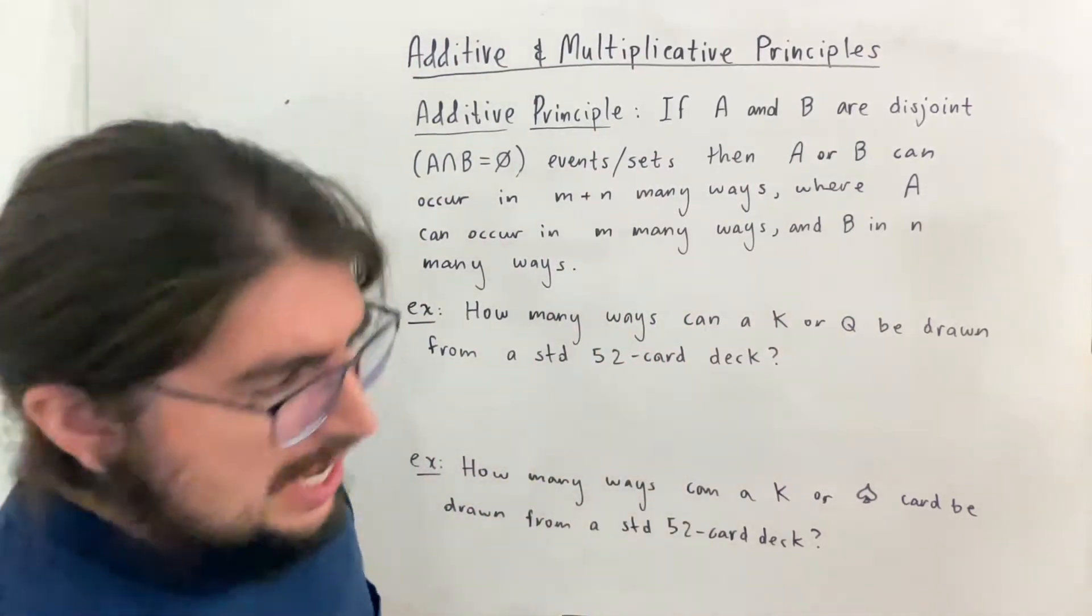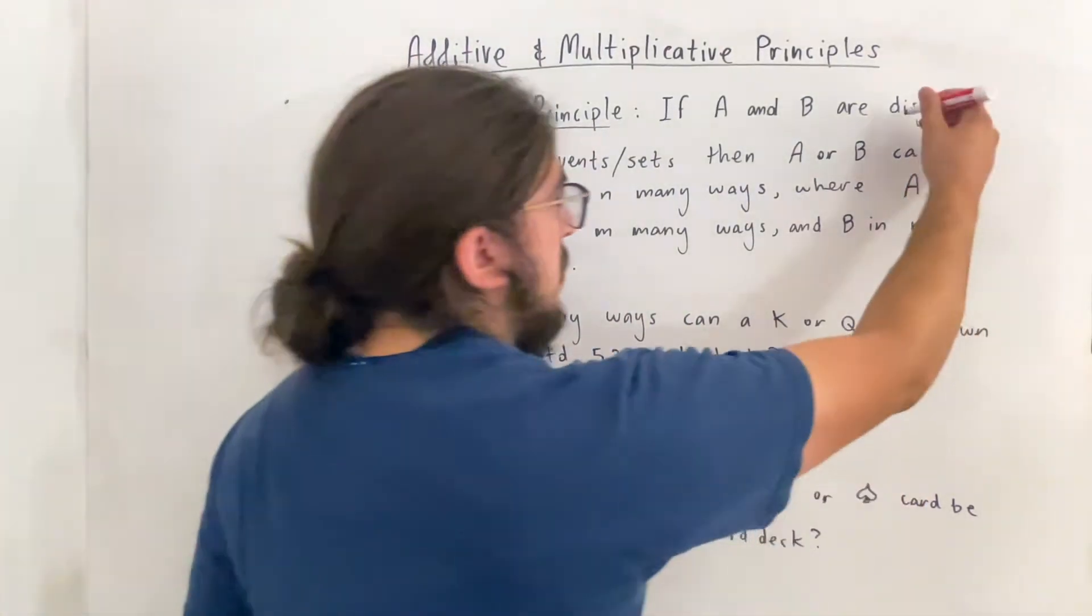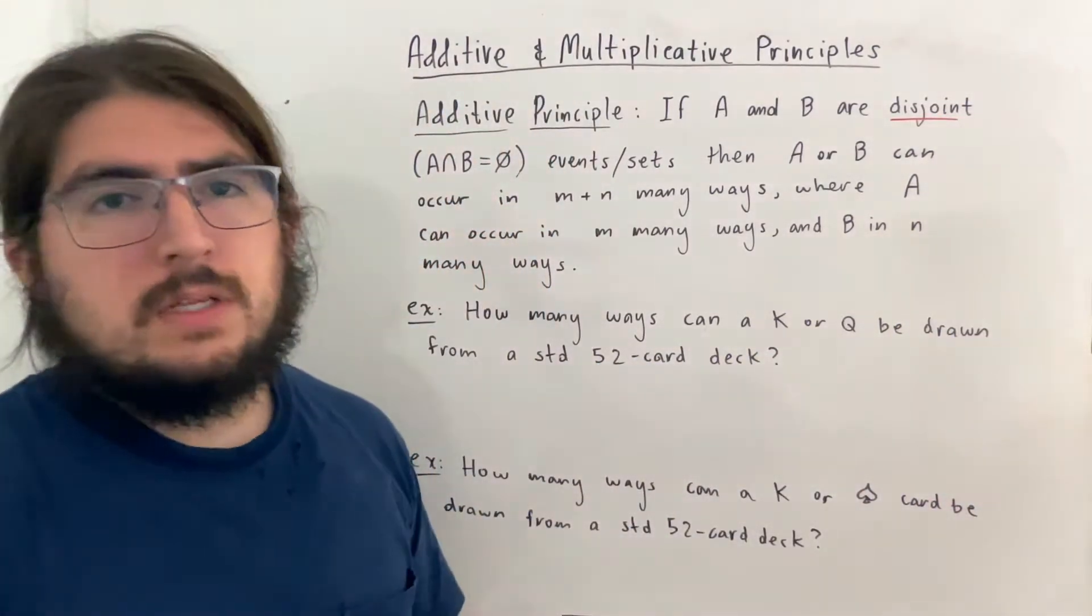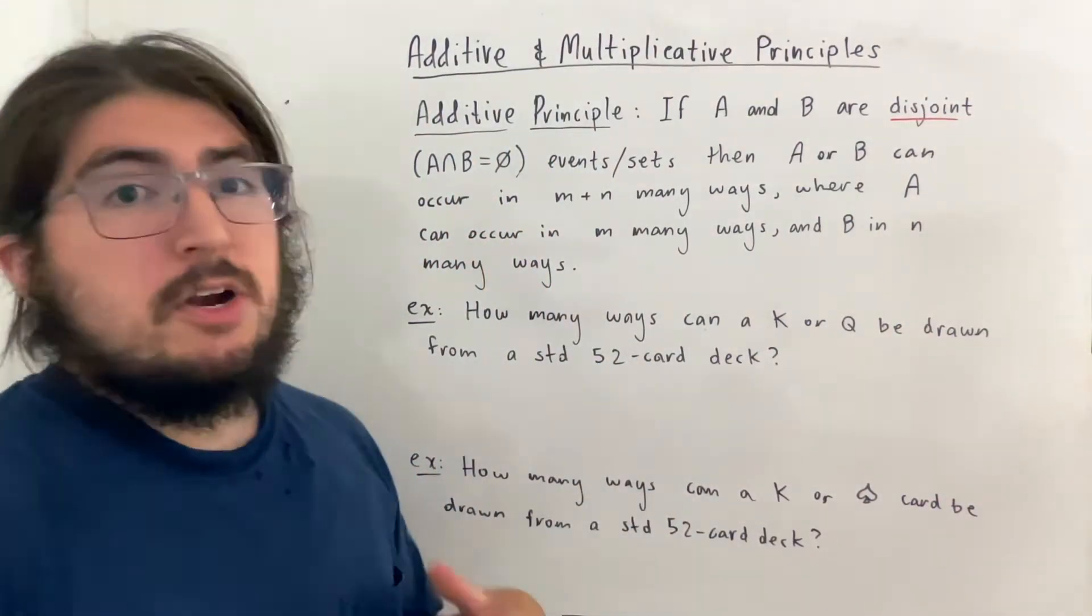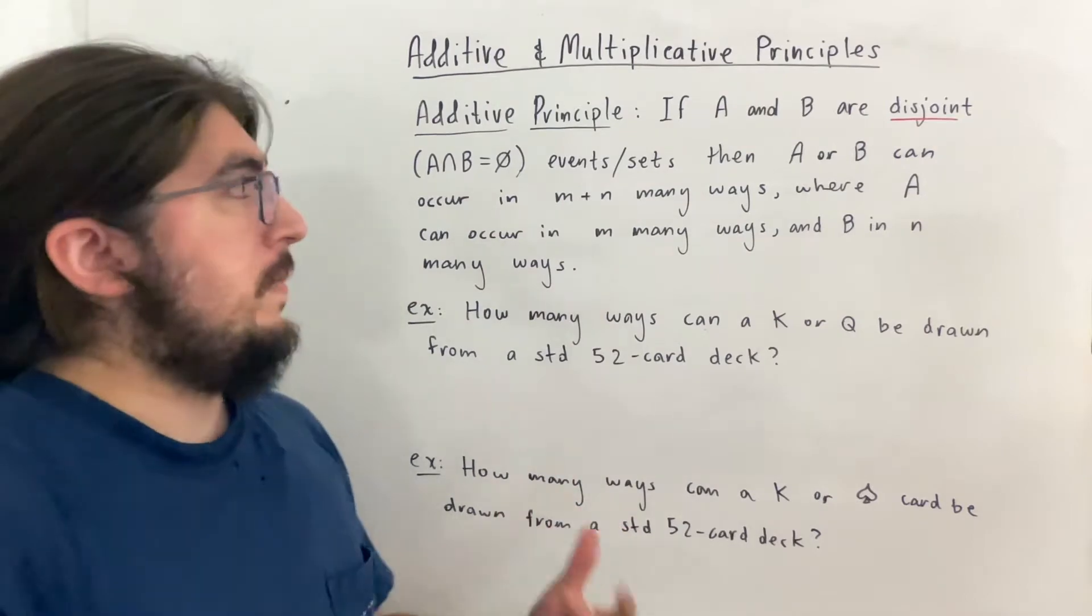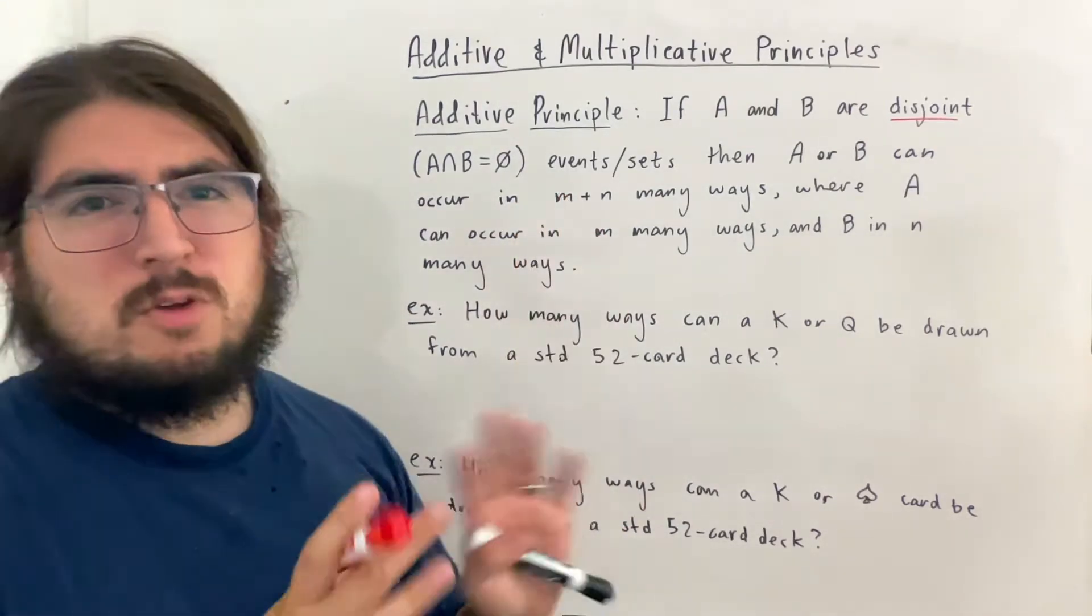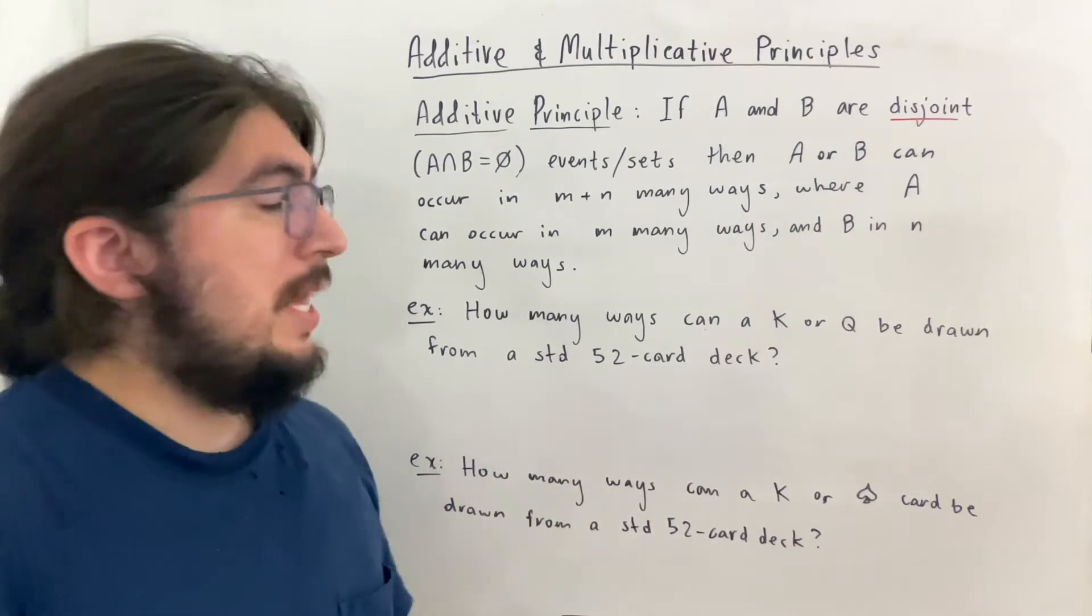I'm actually going to generalize this here in the same board. But the additive principle here says that if A and B are two disjoint events or sets, then A or B can occur in M plus N many ways, where M is the amount of ways A can occur and N is the amount of ways B can occur.